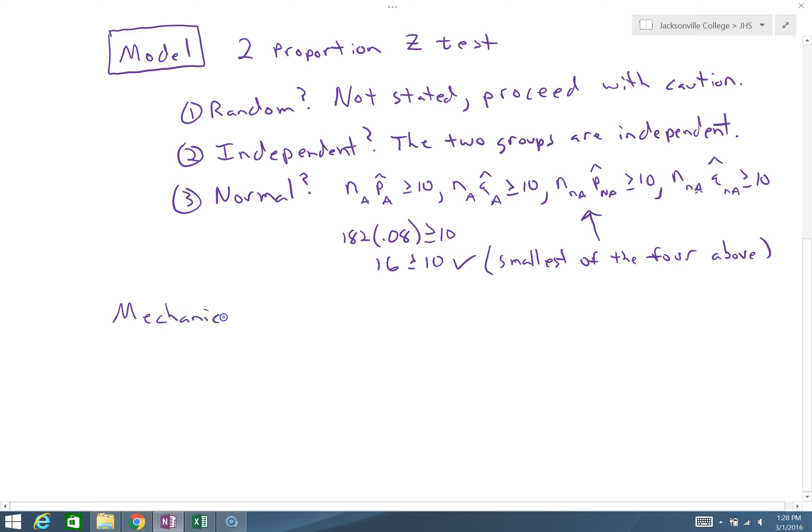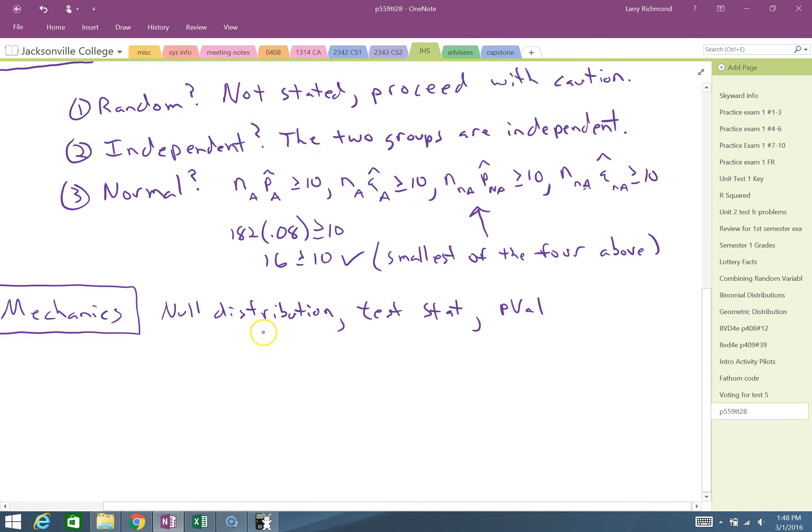Next, mechanics. In our mechanics section, we're going to state our null distribution, the test statistic, and the p-value. For our two sample test, we're going to skip the construction of the null distribution in the mechanics. You certainly need to be able to construct the null distribution. You certainly need to be able to understand specifically about the standard deviation.